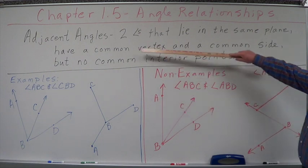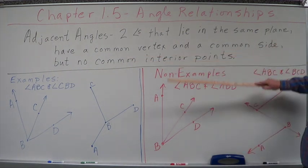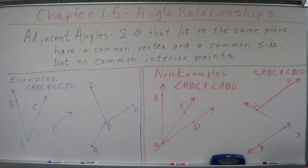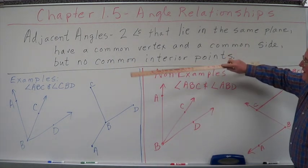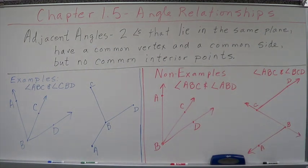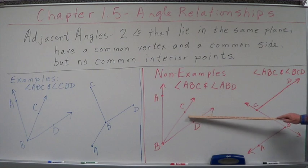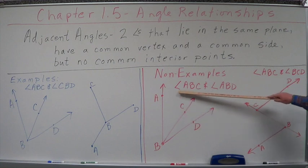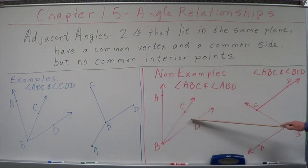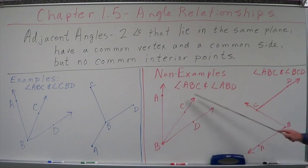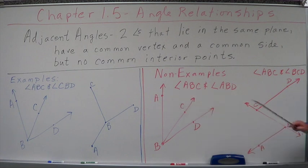But inside of ABD, they have something that is an interior point. They share common interior points. ABD has an interior point that is C that this also has. It's an interior point, not an adjacent point on the fence. So this cannot be adjacent angles.